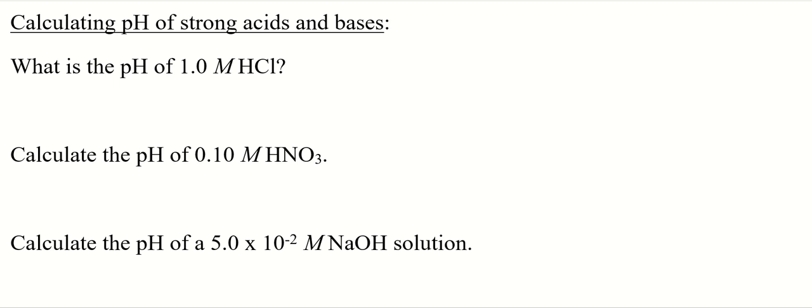Additional problems on calculating pH of strong acids and bases. Strong acids and bases completely ionize. So if we have 1.0 molar HCl, it's going to dissociate 100% into 1.0 molar H+ and 1.0 molar chloride ion.